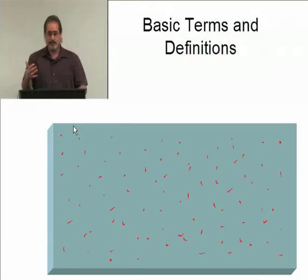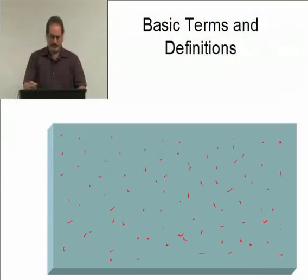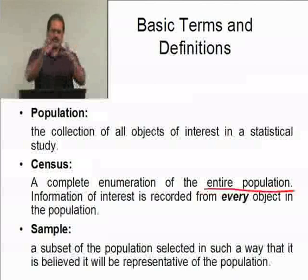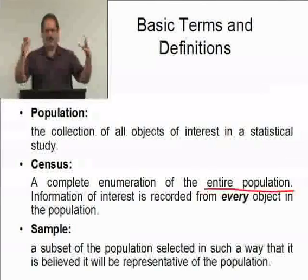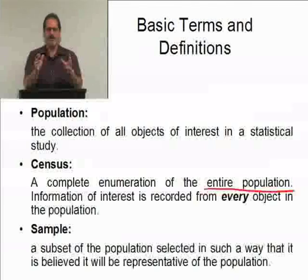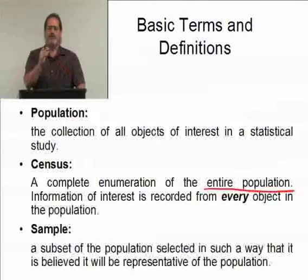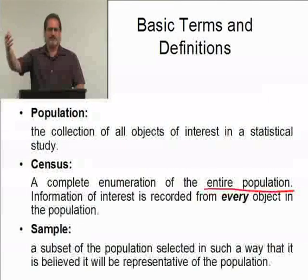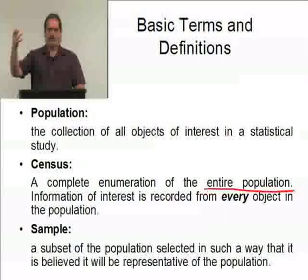So you see, it's virtually impossible to go out to an entire population and conduct a census. Because we can't do that, we take what's known as a sample. A sample is a subset of the population — a smaller group. The idea behind taking that smaller group is: first, we believe the sample is representative of the population — it looks like the population. Second, it's much more manageable. There may be millions of objects in the population, but we go out and take a sample of a hundred or a few hundred.